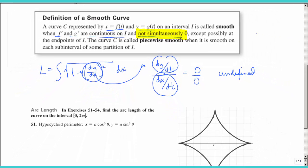So how can we approach this problem if we have derivatives that are simultaneously zero? Well, I'm going to keep going. So our derivatives have to be continuous on some given interval, not simultaneously zero, except possibly at the end points of that interval. Then we could do a piecewise smooth curve, and then it's just smooth on some sub-interval of that given interval.